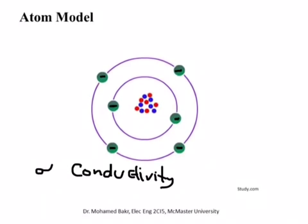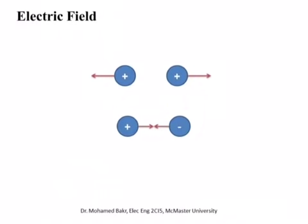Now we move to answer the question: what moves electrons? This takes us back to one of the fundamental laws of electromagnetics called Coulomb's law, which you have heard about in physics courses. If you have two charges with the same polarity, they repel one another and try to move away. If they have opposite polarity, they attract one another.